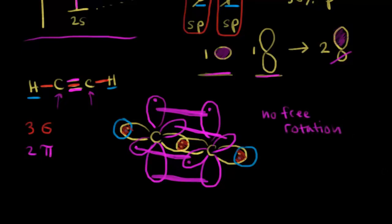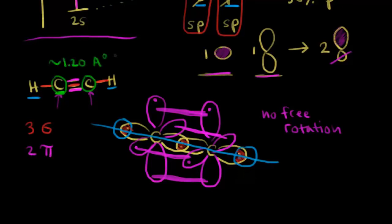We have a linear shape, which gives this linear geometry for the molecule. In terms of bond length, the distance between the two carbons in acetylene is approximately 1.20 angstroms — an even shorter bond length than in our previous videos. Once again, that's due to the increased s character. Increased s character gives smaller orbitals, and that's one way to think about the shorter bond distance in a triple bond compared to a double bond or a single bond.